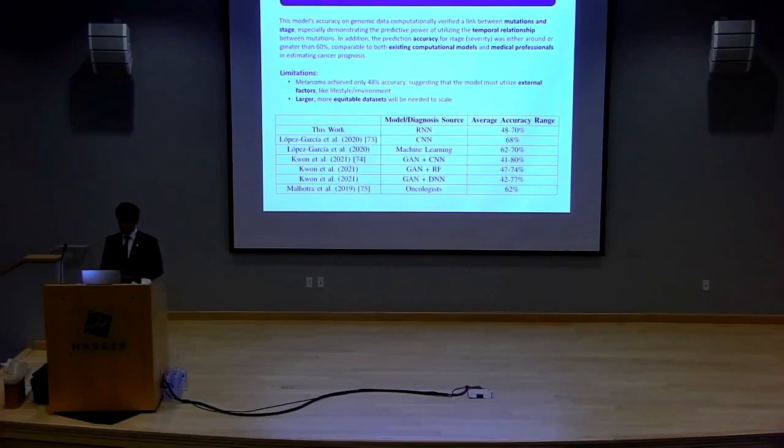However, there are still some flaws that need to be improved. On one hand, melanoma is actually the cancer that was the outlier with only 48% accuracy. And what this really indicates is that these types of cancers that are more implicated with external factors, like UV radiation in the case of melanoma, need these factors to be taken into account to more accurately predict these cancer types. Also, we need larger, more equitable datasets, because TCGA is relatively biased in its distribution of patients, both racially and in gender, to really bring this to scale and make it fair for the general population.